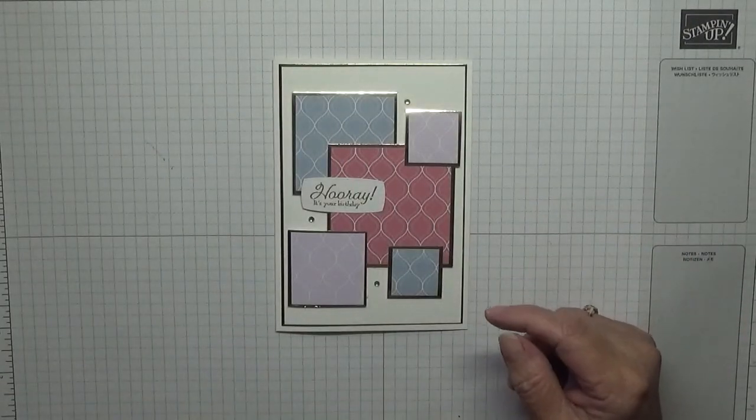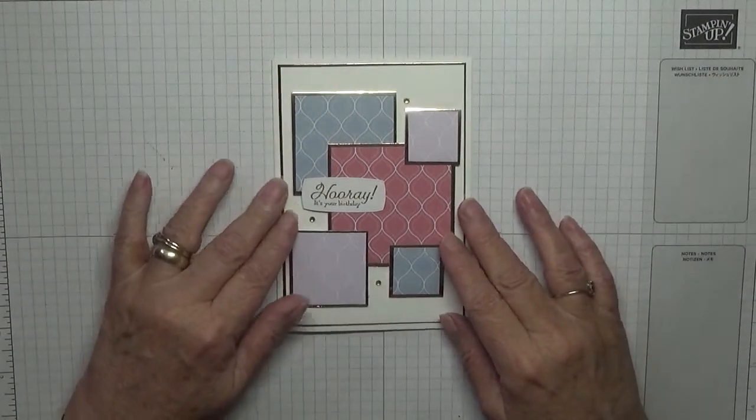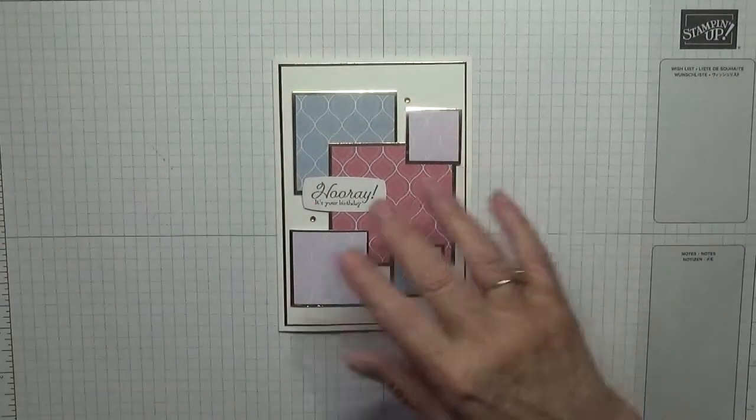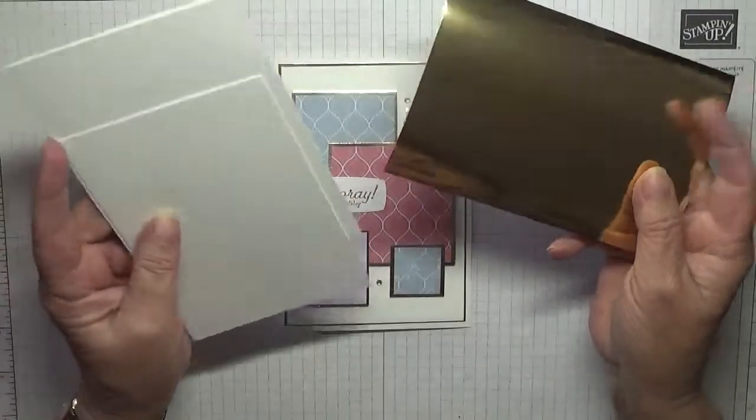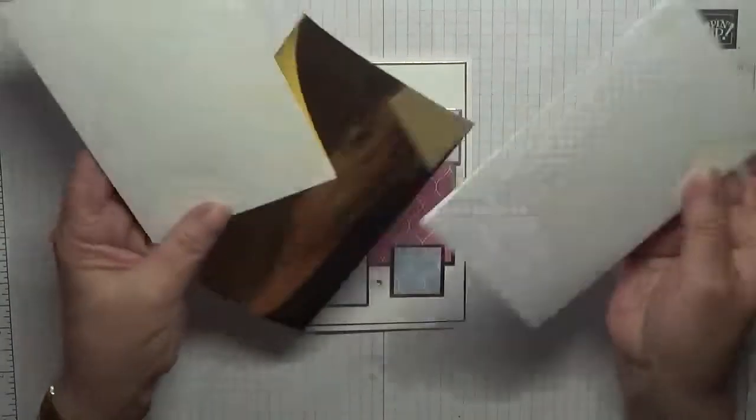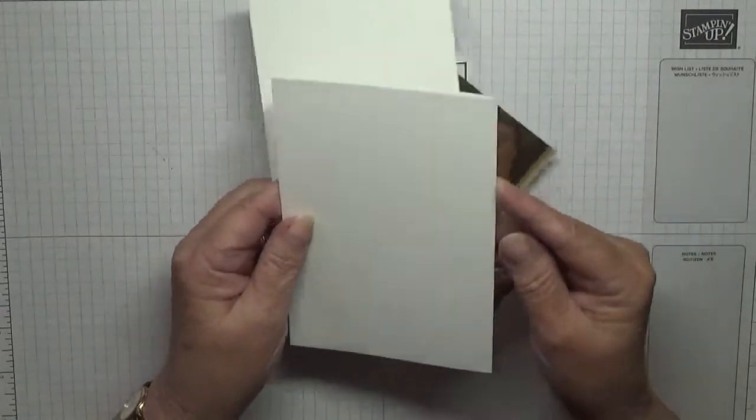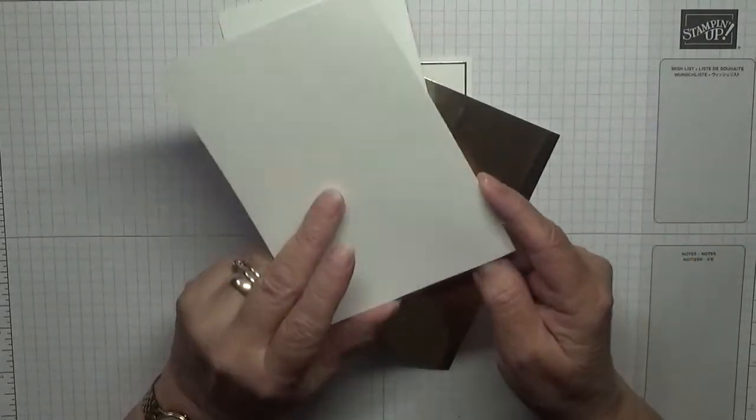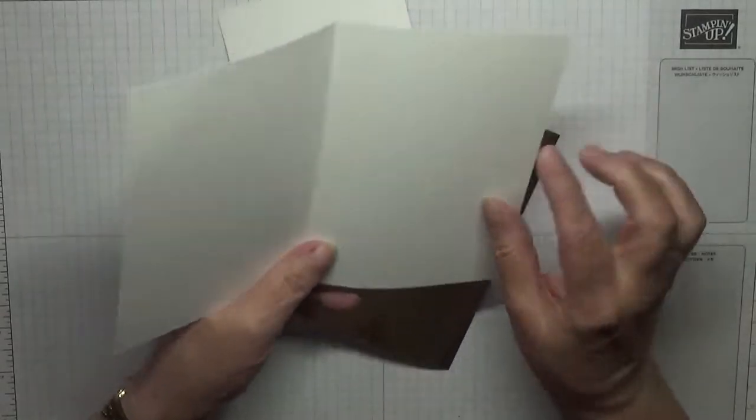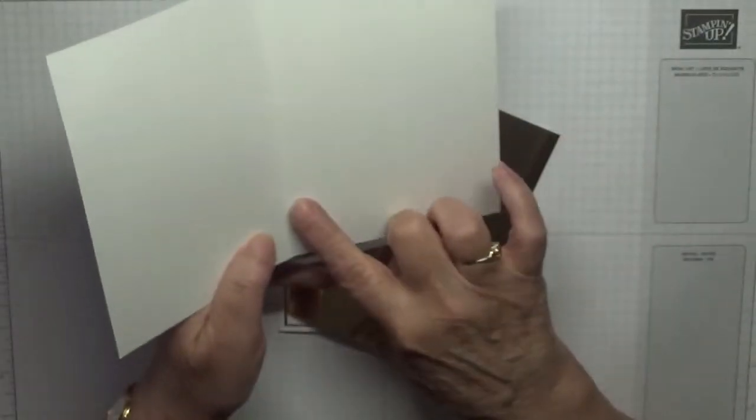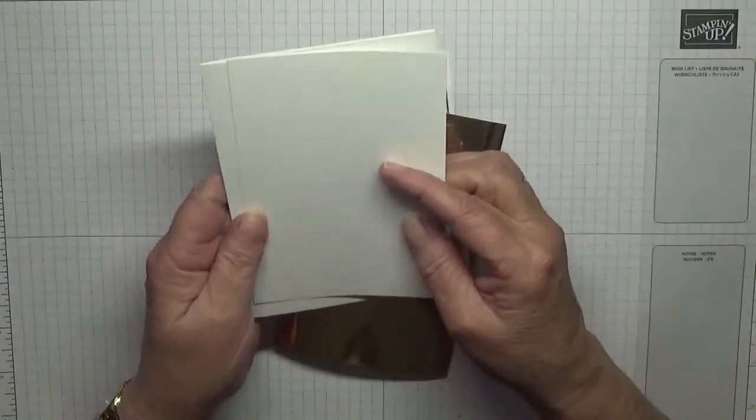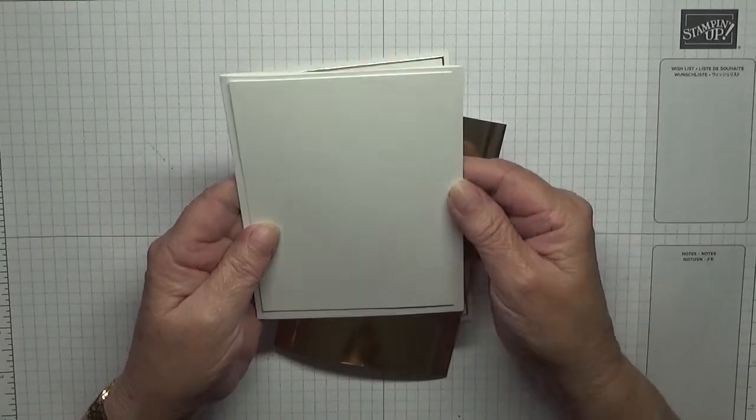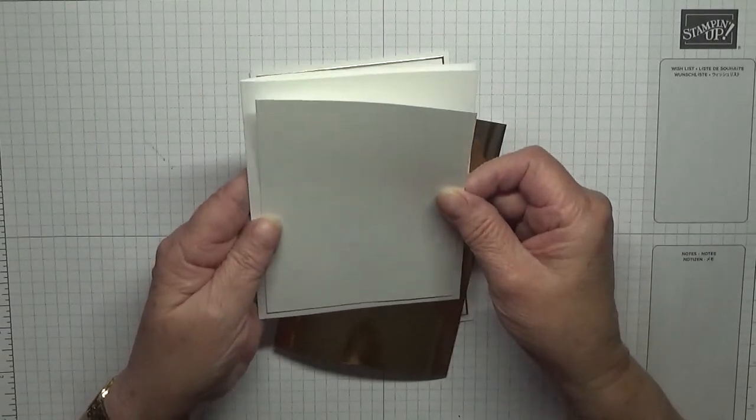To make this I have got a card blank. This is basic white cardstock, eight and a quarter by five and seven eighths, scored at four and one eighth and folded in half. A piece of basic white for the top layer.